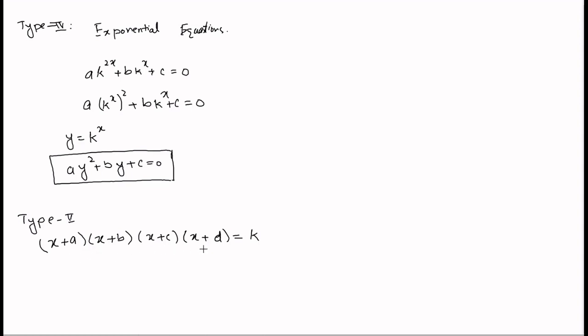These forms include biquadratic equations in which the highest power of the variable is 4; these are also called biquadratic equations. Examples for each type are given in the description. If you are interested in learning more about each type, you can watch the separate videos. If you find this video helpful, please like, subscribe, and press the bell icon to get notified whenever a new problem is solved. Thank you.